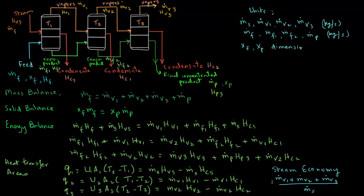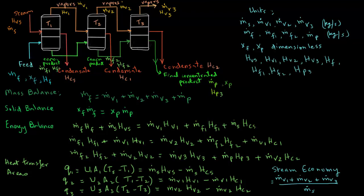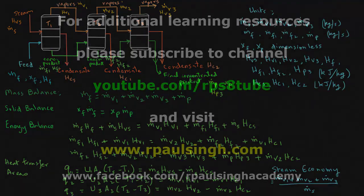And then the enthalpy terms — hvs, hv1, hv2, hv3, hf, hf1, hf2, hp3, hcs, hc1, and hc2 — are all in kilojoules per kilogram.